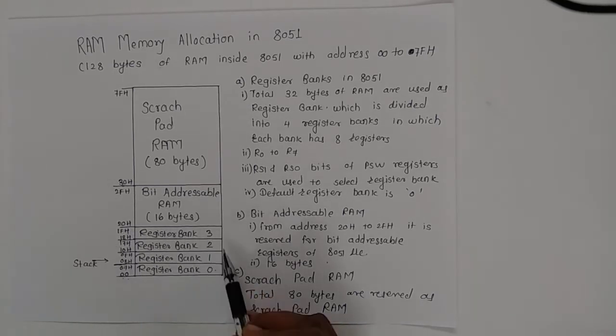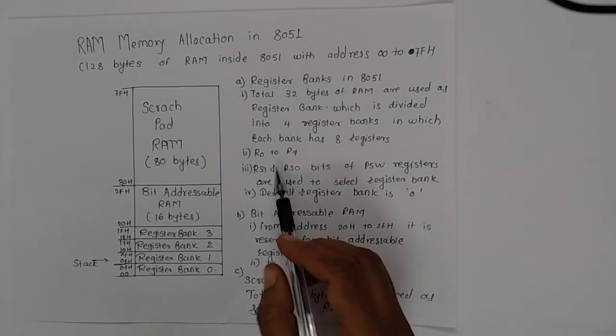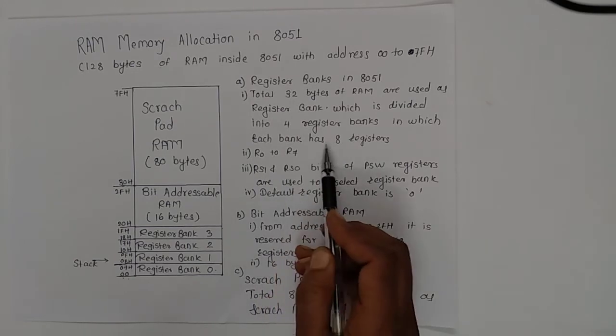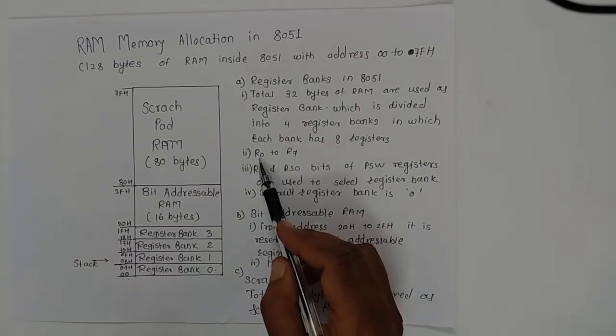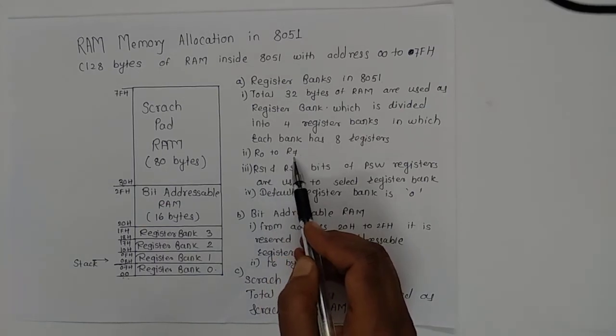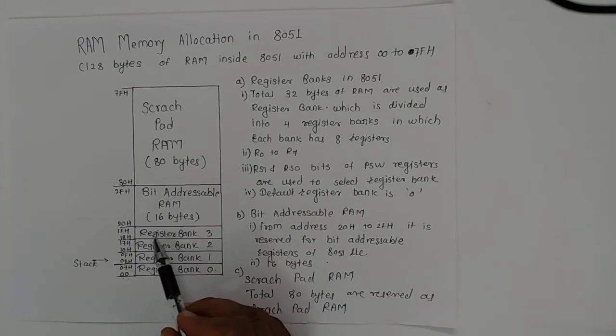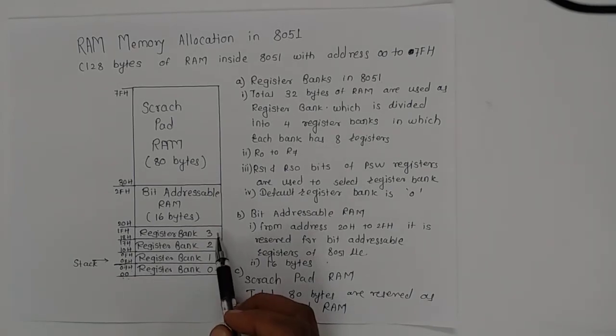Each register bank has 8 registers, from R0 to R7. Now if you look at the four register banks, we need to have two bits for the selection of these register banks.